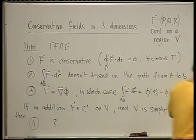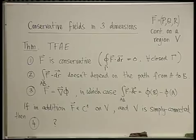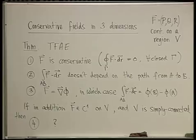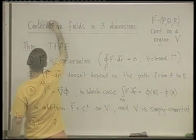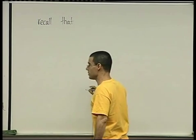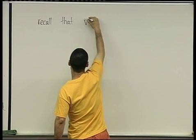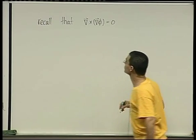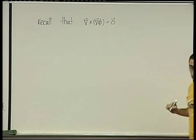Let's figure out what Condition 4 is. The idea is based on a property of the curl we discussed earlier: the curl of a gradient equals the zero vector. This is true as long as the scalar function φ is C2. Does everybody remember that property?